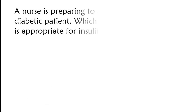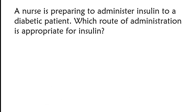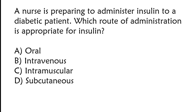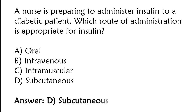A nurse is preparing to administer insulin to a diabetic patient. Which route of administration is appropriate for insulin? Options: oral, intravenous, intramuscular, subcutaneous. The correct answer is option D: subcutaneous.